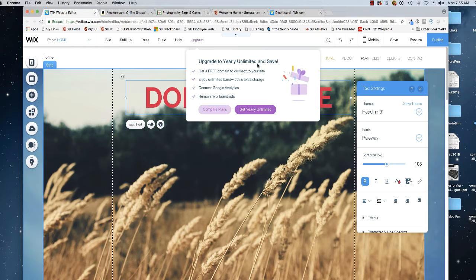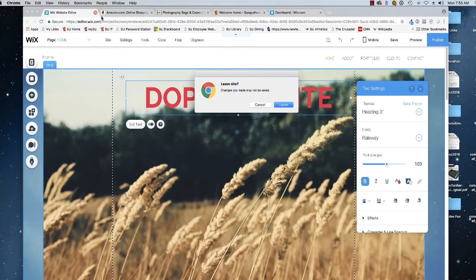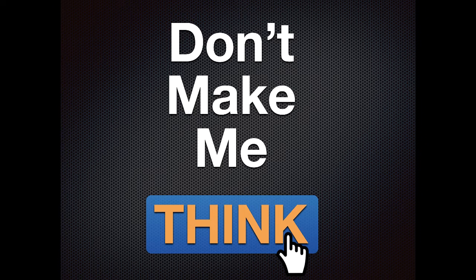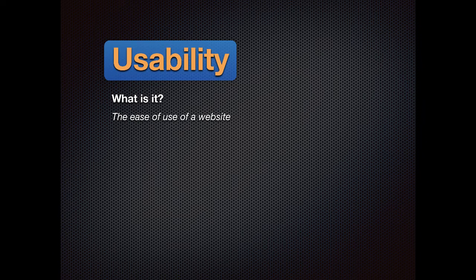But there's another way to make a dope website, and that's to not follow the rules that are known to all websites. That's called web usability, and that's what I want to talk about now. The treatise on this is called Don't Make Me Think. Web usability is the ease of use of a website. For our class, we can probably expand this to include the ease of use of any kind of media we're going to use.